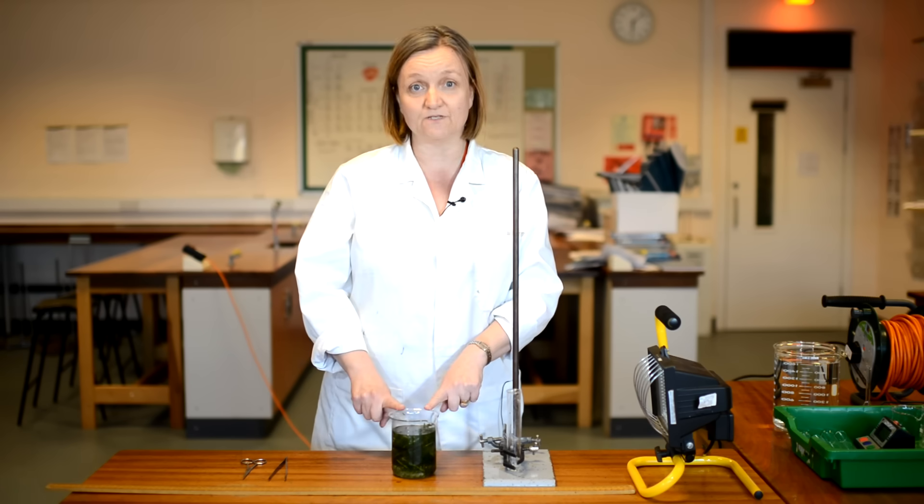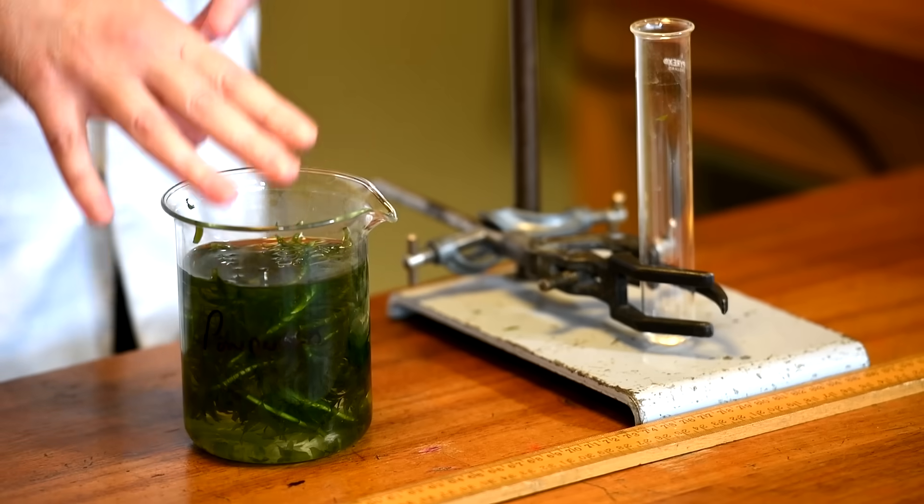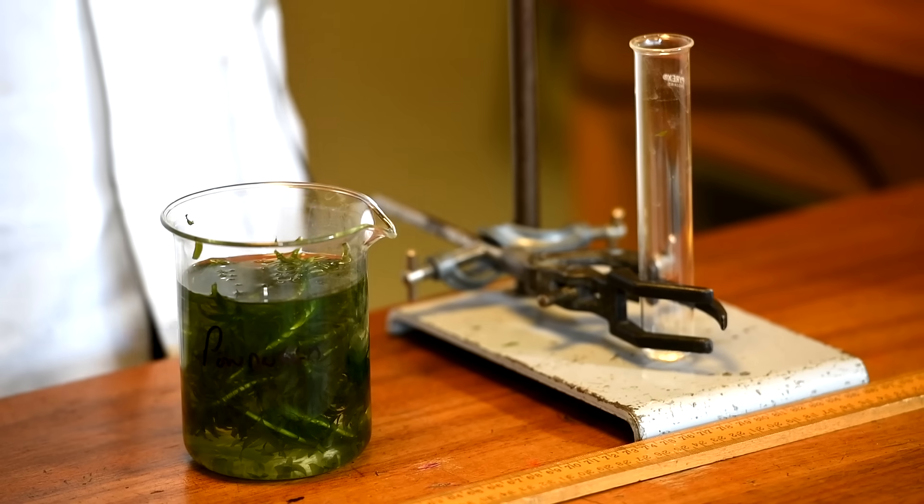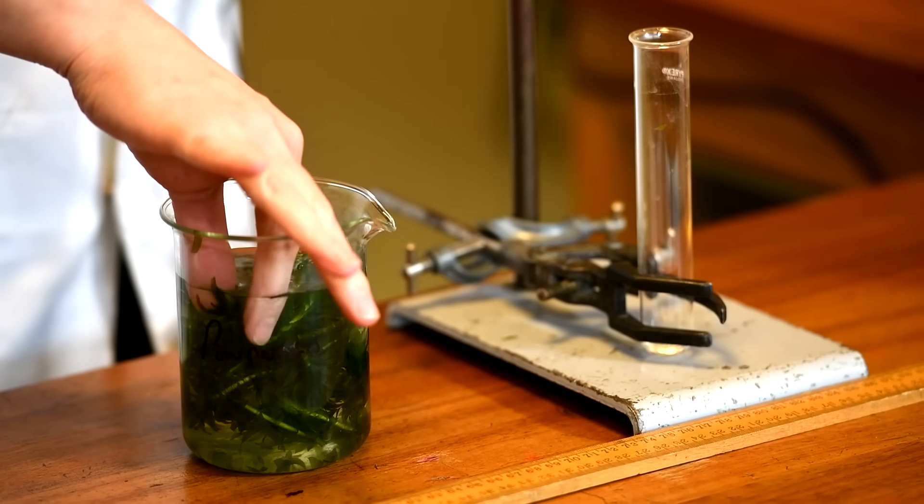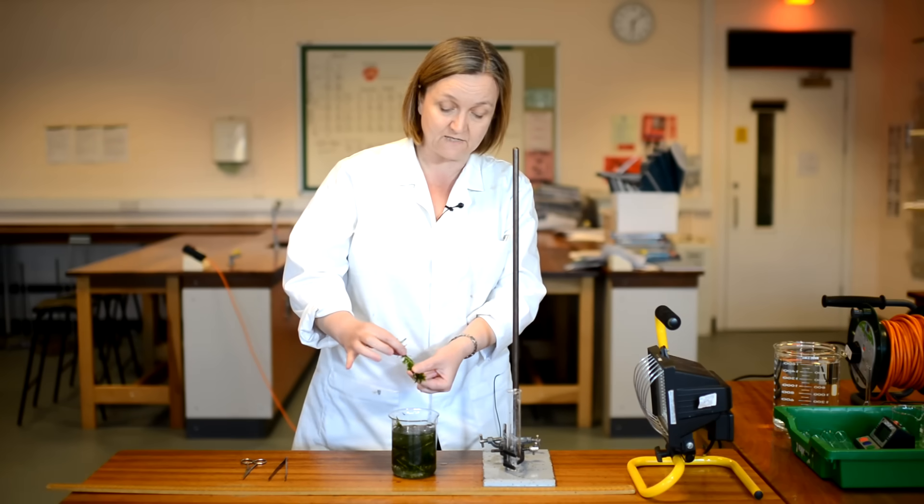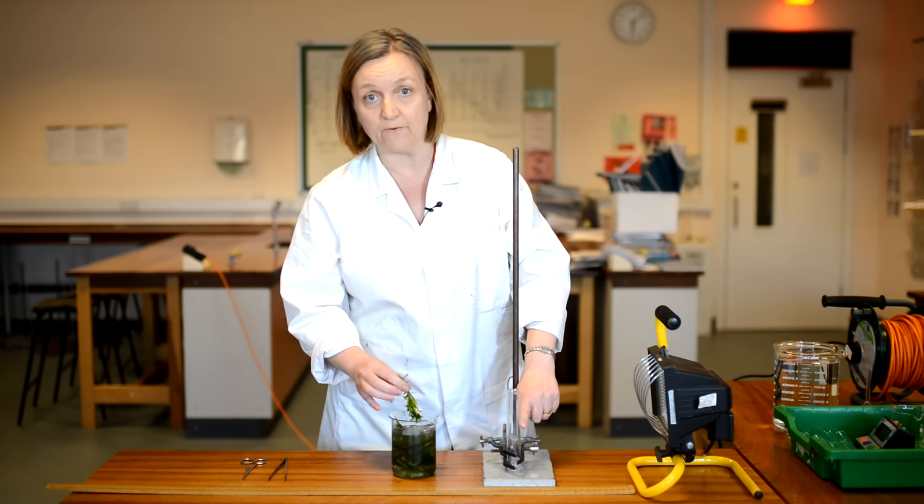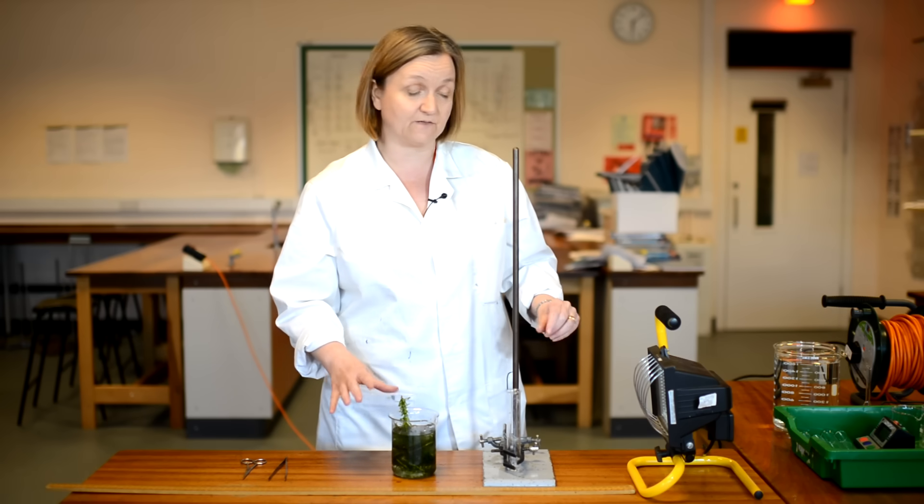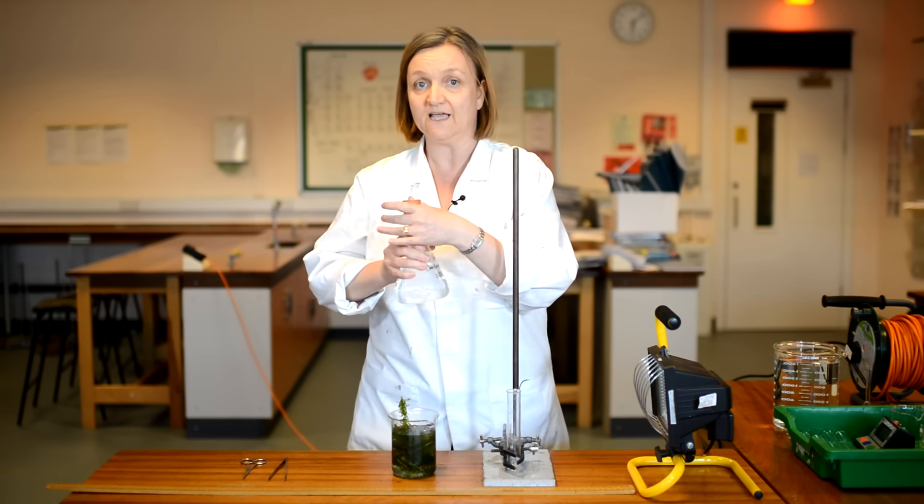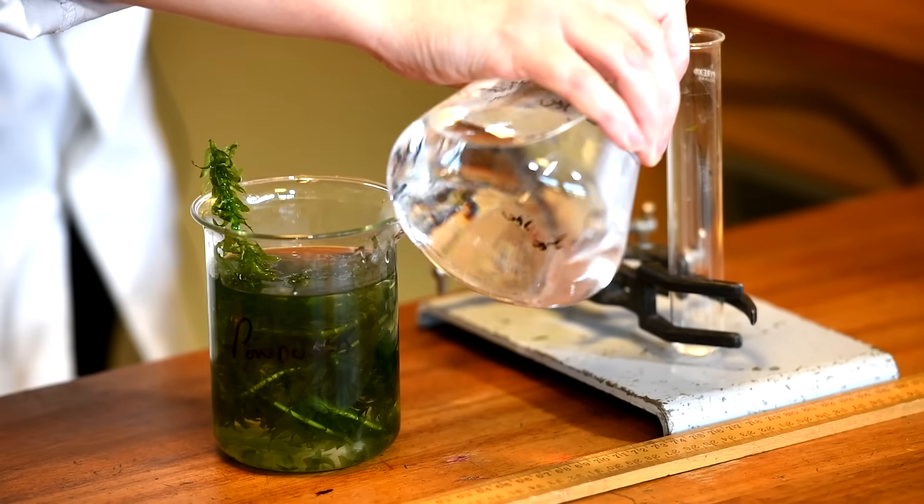So we're going to use an aquatic plant. This is just common pond weed that you can buy from a pet shop or a garden centre. And we've got this in some water at the moment, just keeping it nice and fresh. So we're going to take a piece about this long and we're going to pop it into a boiling tube. Now, before I do that, I'm going to put some sodium hydrogen carbonate solution in the boiling tube as this will encourage the pond weed to photosynthesize.